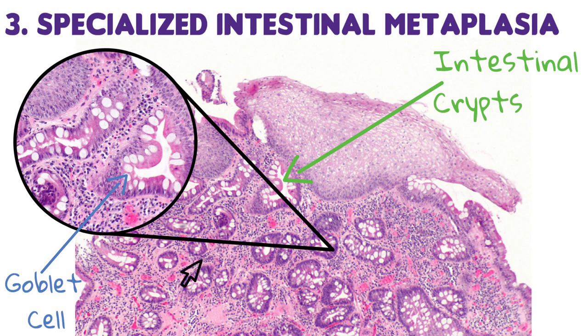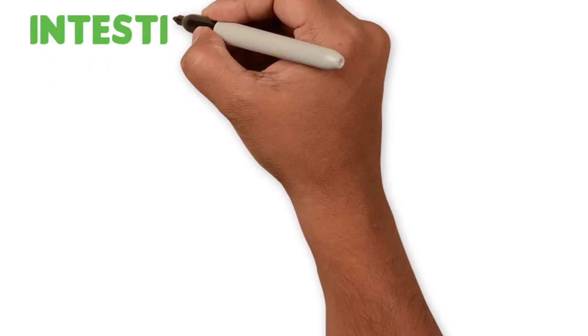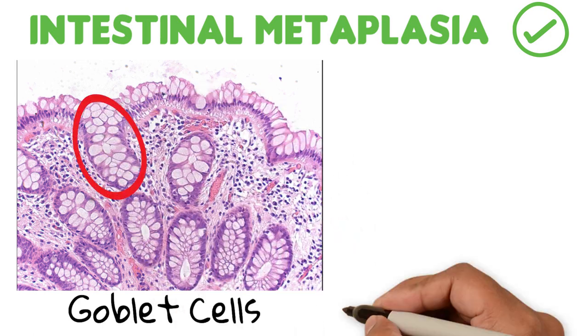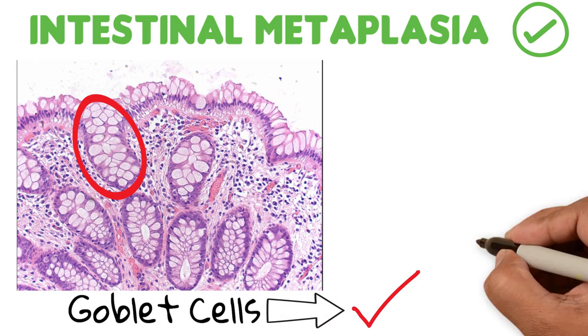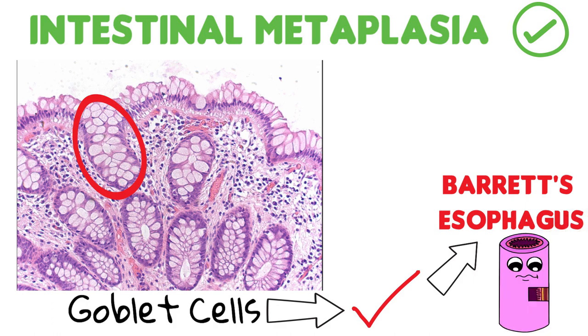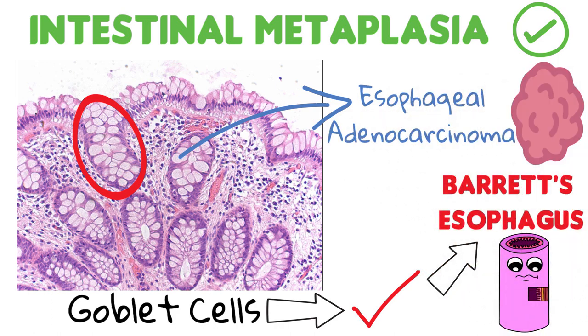Remember goblet cells? We talked about them in the glandular epithelia video. According to the American Gastroenterological Association, the term Barrett's esophagus should only be used when intestinal metaplasia is present, meaning that goblet cells need to be present in the biopsy in order to diagnose Barrett's esophagus. The justification is that intestinal metaplasia has the greatest risk of progression to esophageal adenocarcinoma.